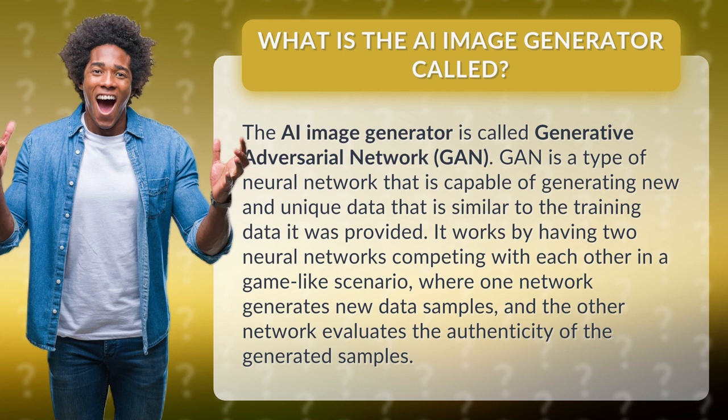GAN is a type of neural network that is capable of generating new and unique data that is similar to the training data it was provided. It works by having two neural networks competing with each other in a game-like scenario, where one network generates new data samples, and the other network evaluates the authenticity of the generated samples.